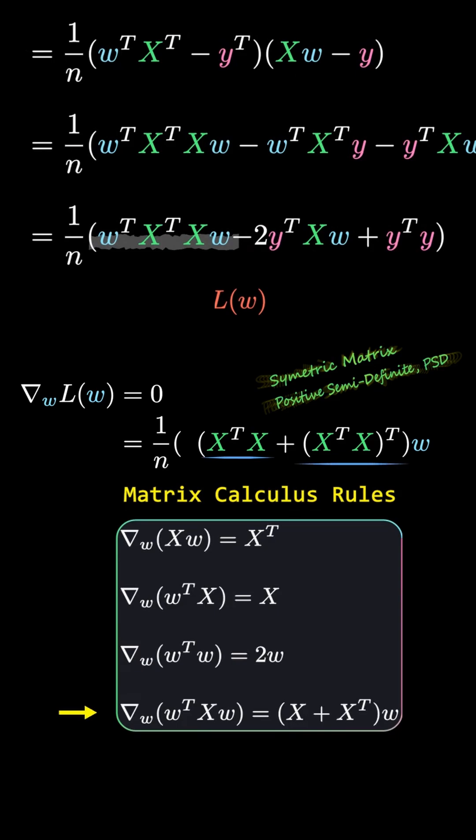Let's continue the differentiation. Since X transpose X is symmetric, we can simplify the two matrices as identical.